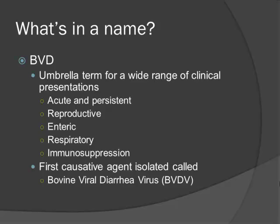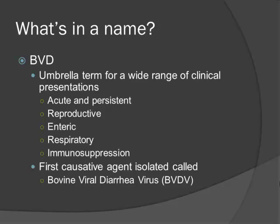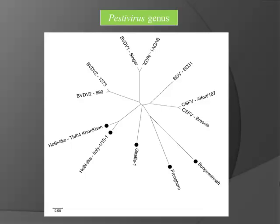The first causative agent isolated was called bovine viral diarrhea virus, but since then we've come to recognize that we have other pathogens that cause BVD. What I'm showing here is the genetic family tree of pestiviruses. Originally, we just called it bovine viral diarrhea virus if it came out of cattle, classical swine fever virus if it came from pigs, and border disease virus if it came from sheep. Then we found that things we were calling BVD were actually border disease, and vice versa. We found there are actually two different virus species causing BVD: BVD1 and BVD2.